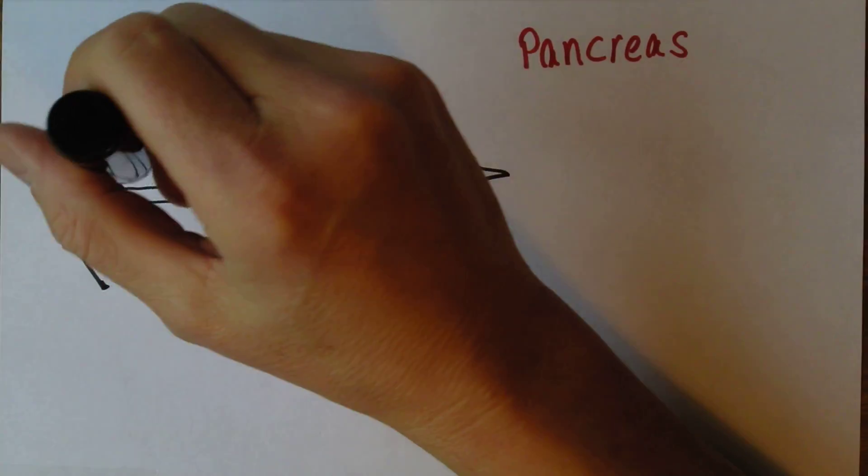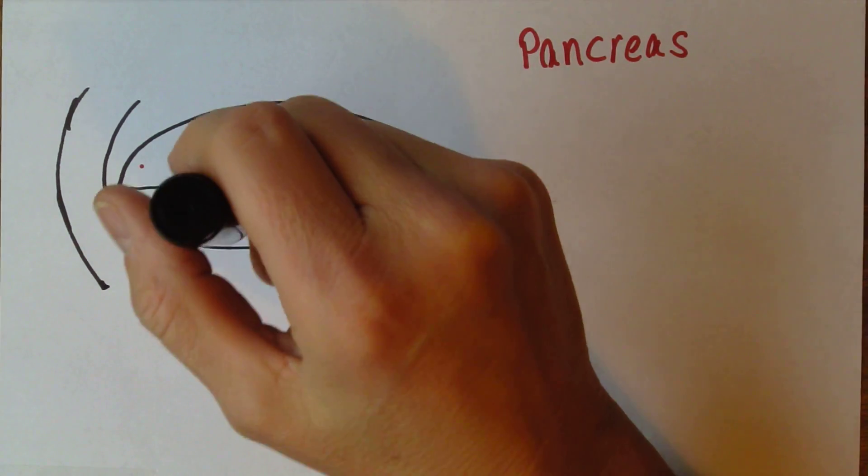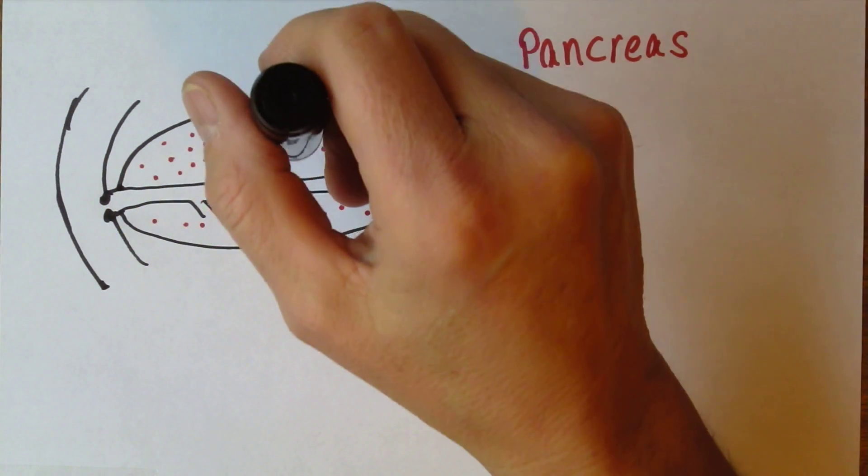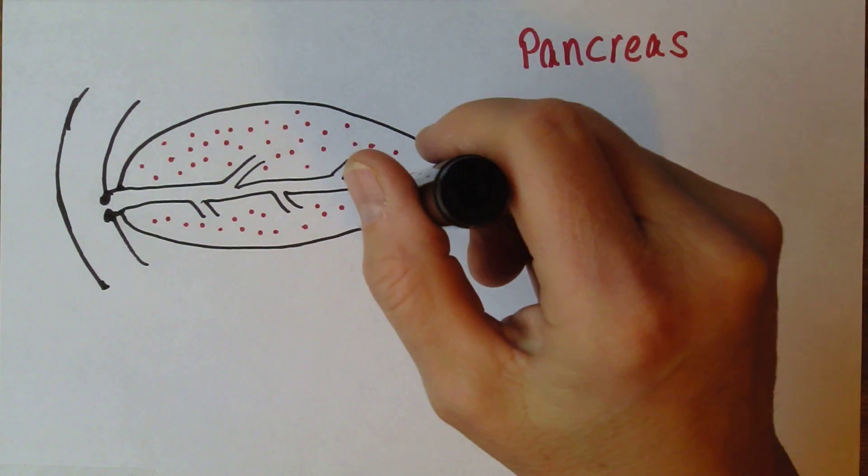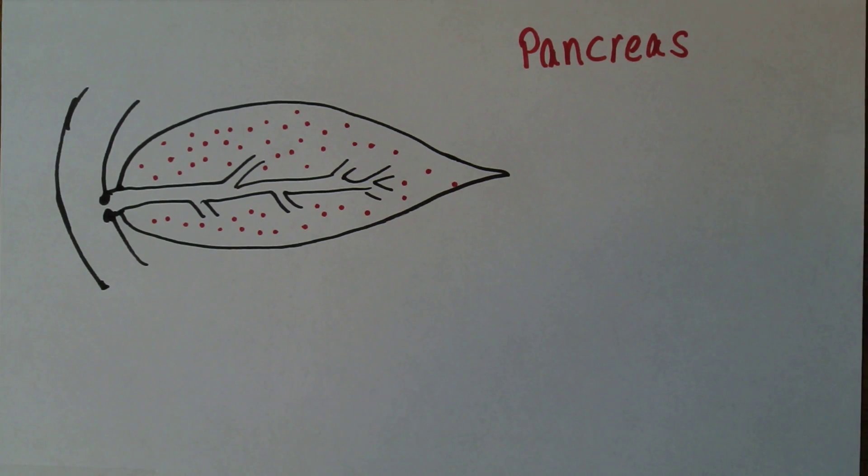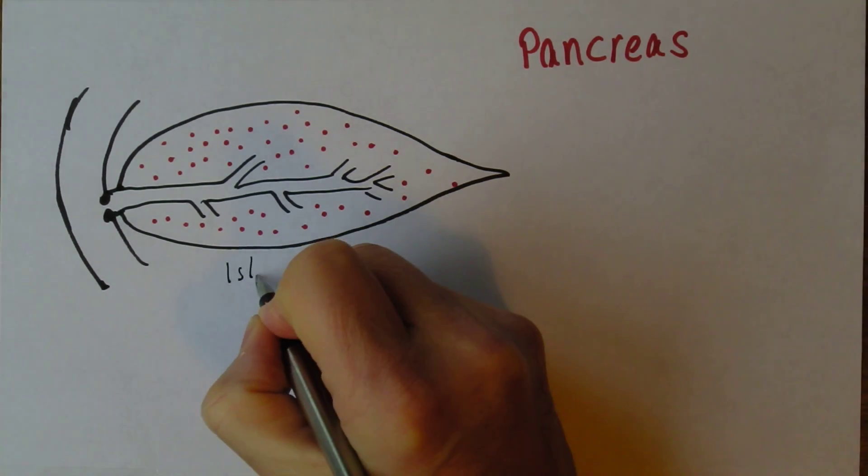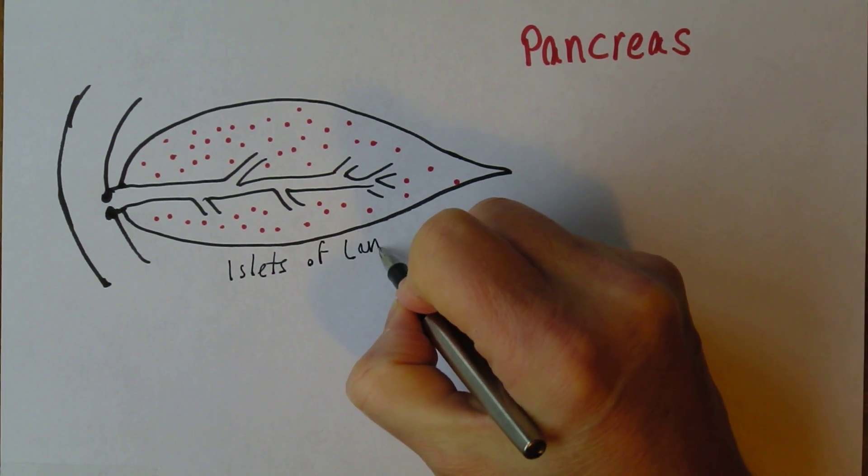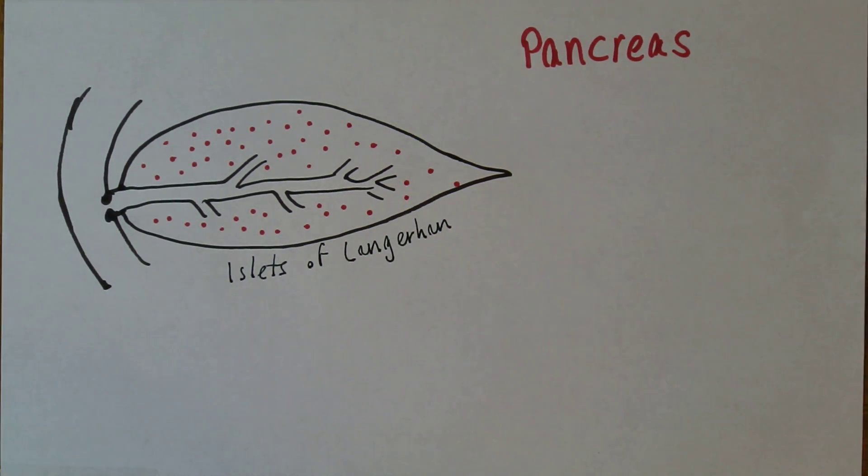But throughout the pancreas, there's about a million little islets of tissue. It is the minority of the pancreatic tissue, but there are many pancreatic islets. You might remember these are the classic old-fashioned names—the pancreatic islets, and the name associated with them is Langerhans, after the guy who first saw them down the microscope.